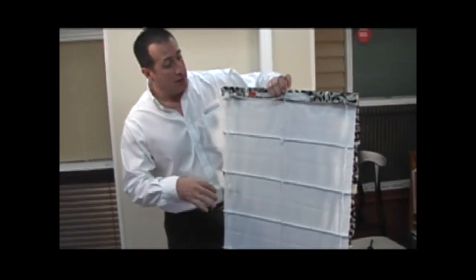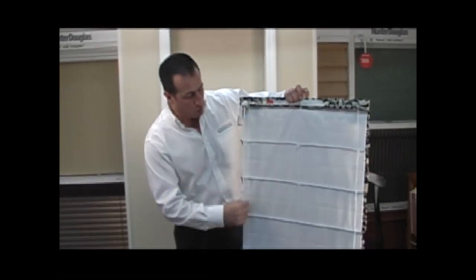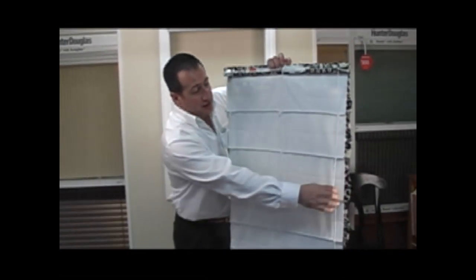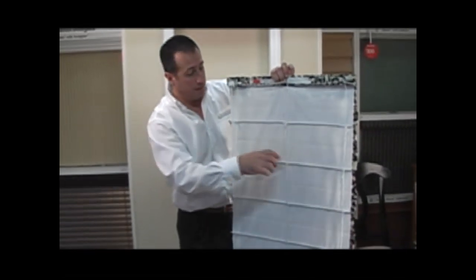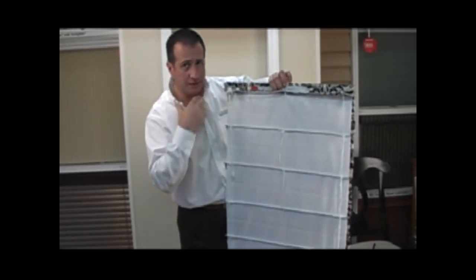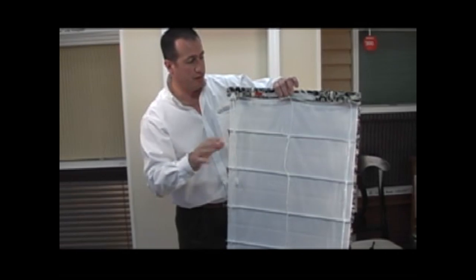We also offer this particular style in a plain fold. I would like to point out that all of our Roman Shades do come standard with a cord shroud for child safety. That keeps the cords from extending too far so a child can't strangle themselves. Very important.